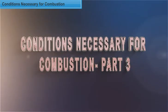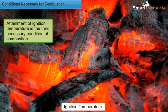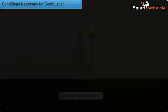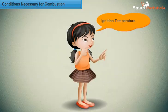Conditions Necessary for Combustion Part 3. The third necessary condition for combustion is attainment of ignition temperature. The lowest temperature at which a substance catches fire is called its ignition temperature. Now let us understand the necessity of attainment of ignition temperature in combustion by doing an activity.